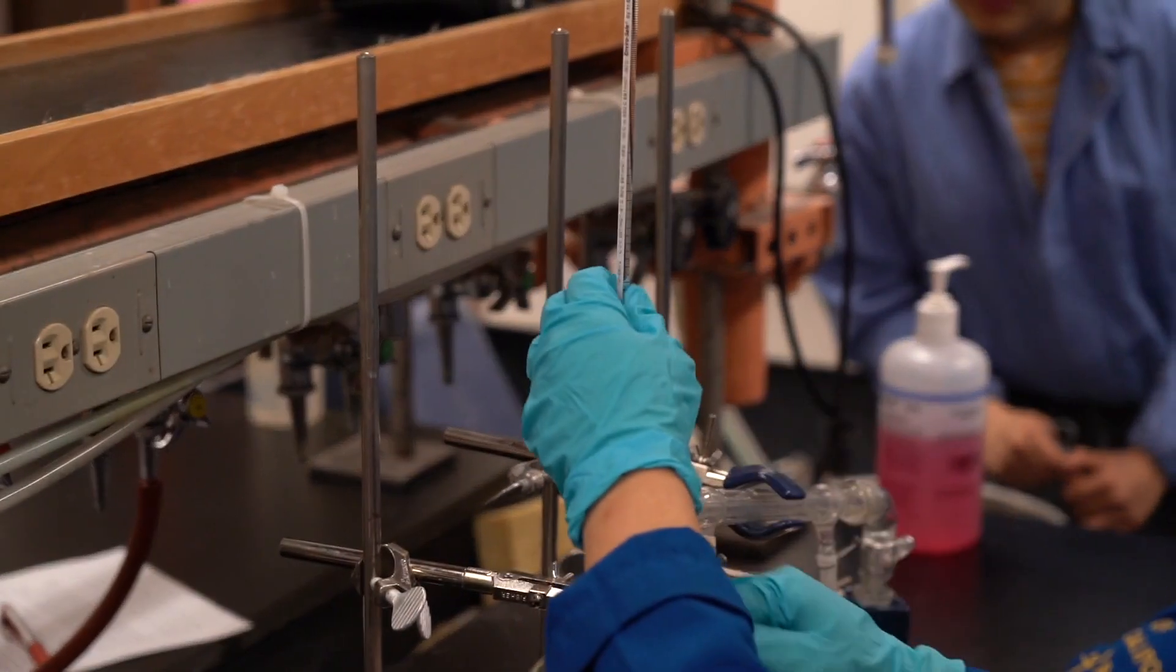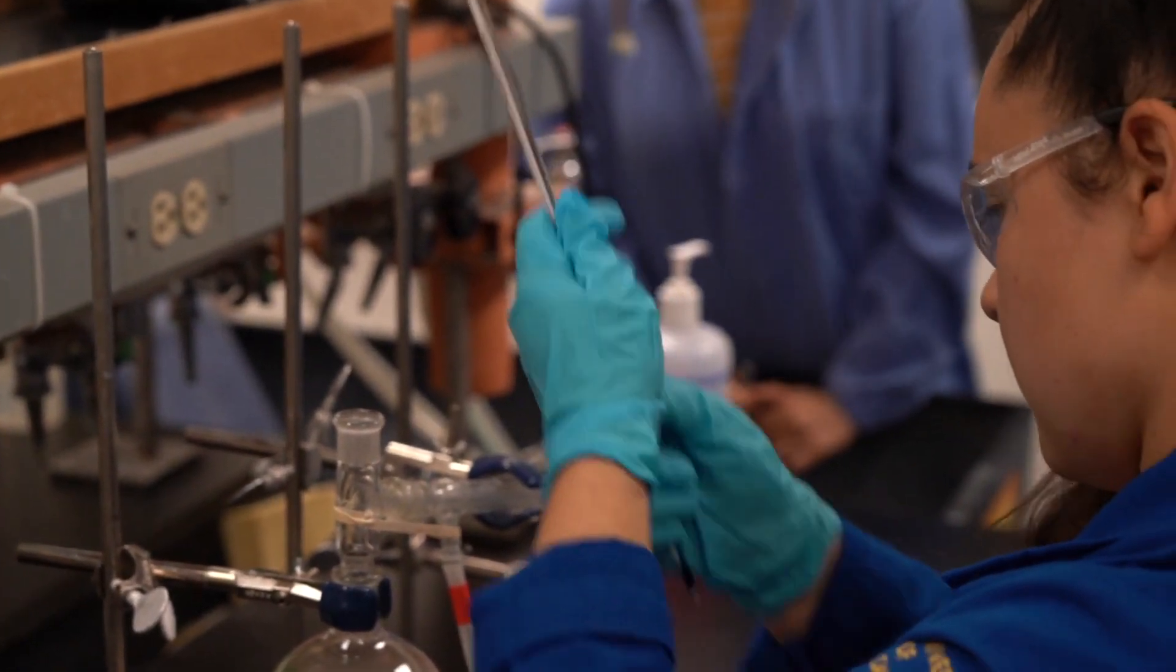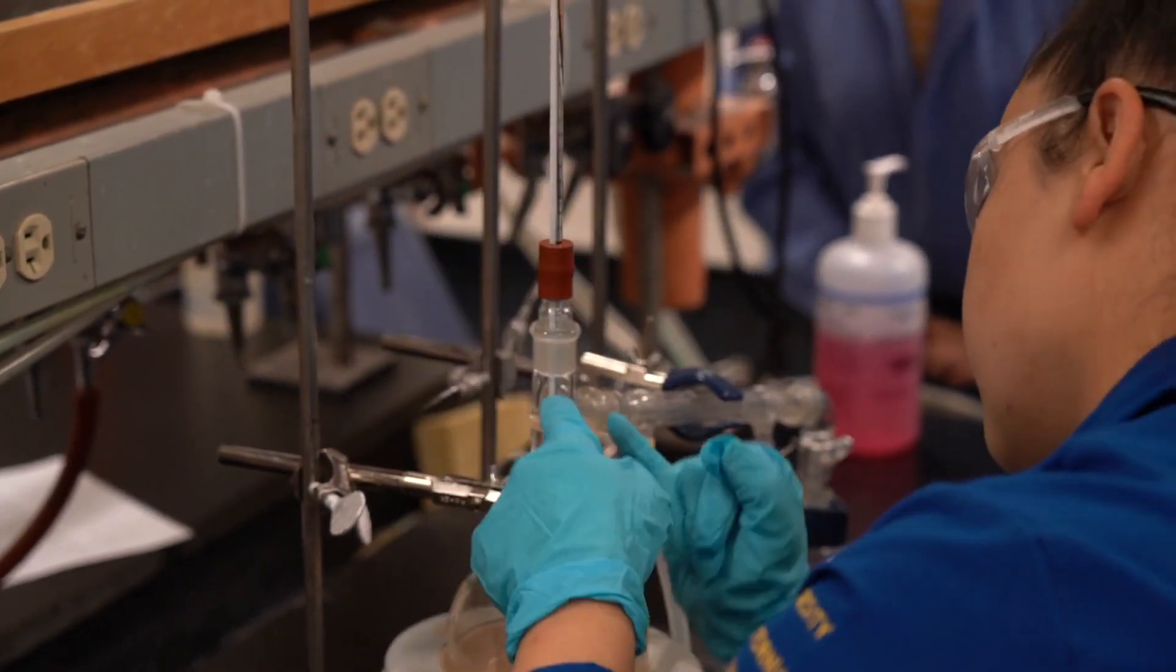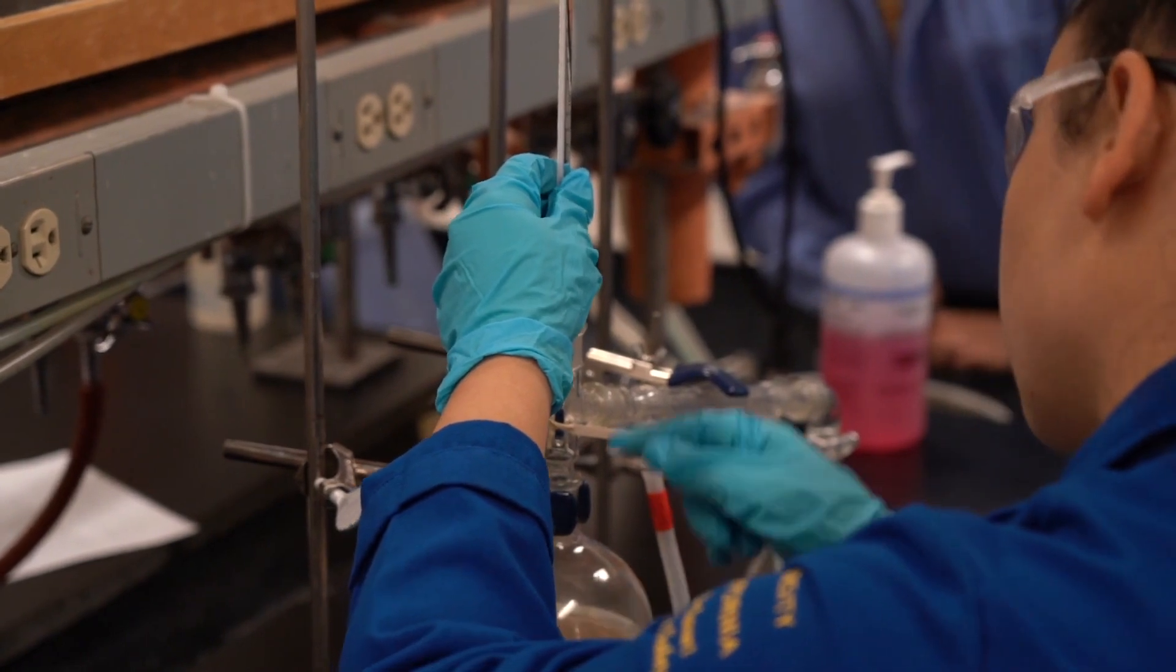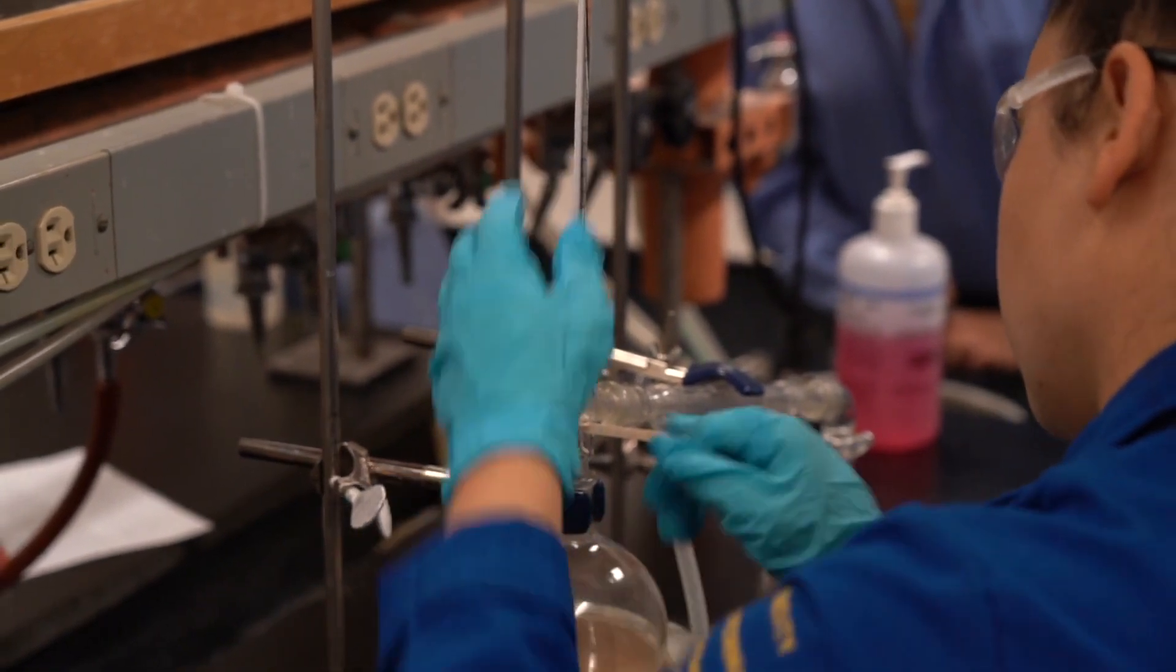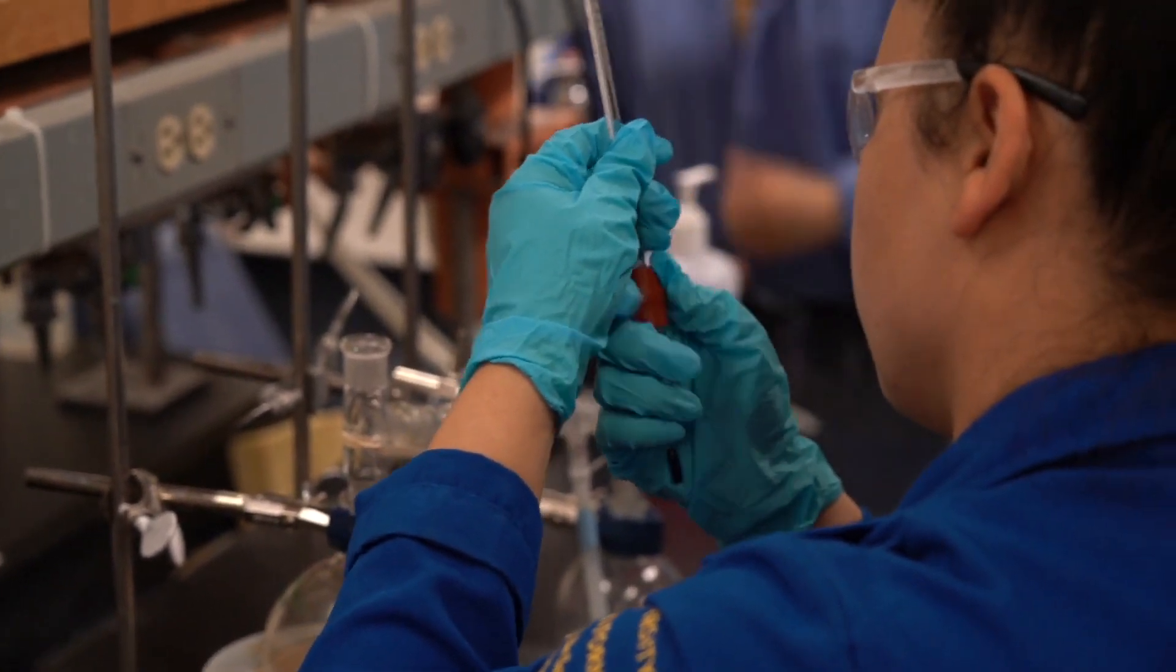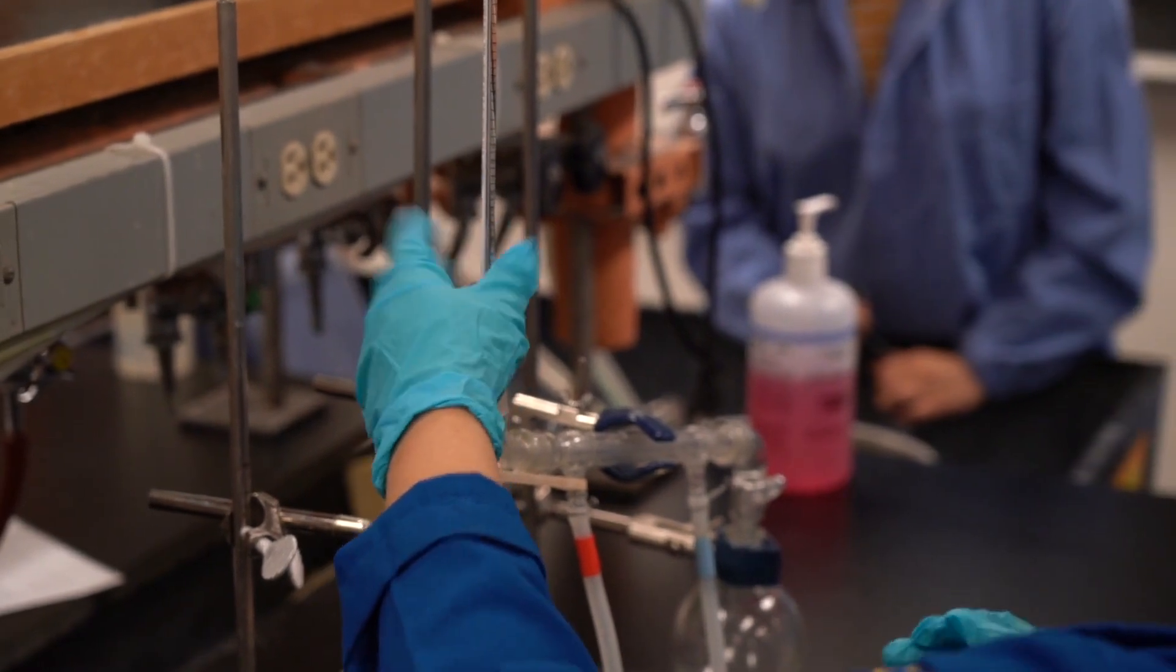So what I want is the thermometer tip, the blue bit, to be hovering right at this juncture. I would say right at the little T, because you don't want the temperature of the bath. You want the condenser. Like that. There you go.